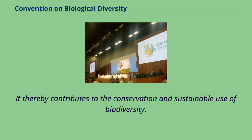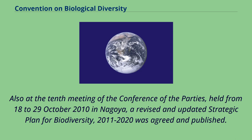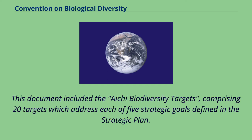Also at the 10th meeting of the Conference of the Parties, held from October 18 to 29, 2010 in Nagoya, a revised and updated strategic plan for biodiversity 2011–2020 was agreed and published. This document included the Aichi Biodiversity Targets, comprising 20 targets which address each of five strategic goals defined in the strategic plan.